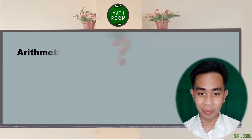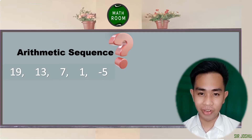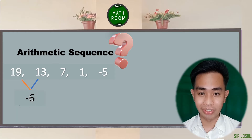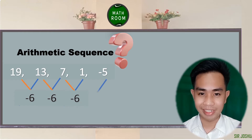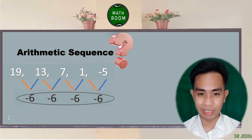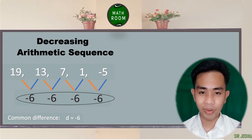Let's identify if the number pattern 19, 13, 7, 1, negative 5 is an example of arithmetic sequence. First, let's identify the common difference. The second term, 13, minus the first term, 19, is equal to negative 6. The third term, 7, minus the second term, 13, gives you negative 6. The fourth term, 1, minus the third term, 7, is equal to negative 6. The fifth term, negative 5, minus the fourth term, 1, gives us negative 6. Since the common difference d is equal to negative 6, we can conclude that this is an example of arithmetic sequence.